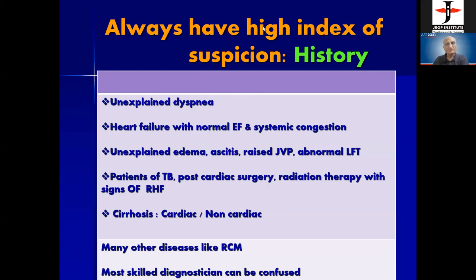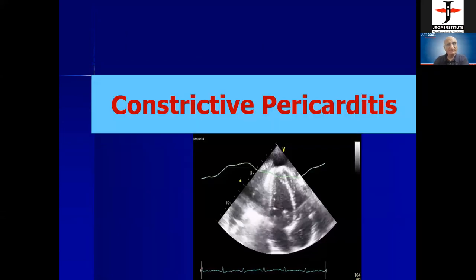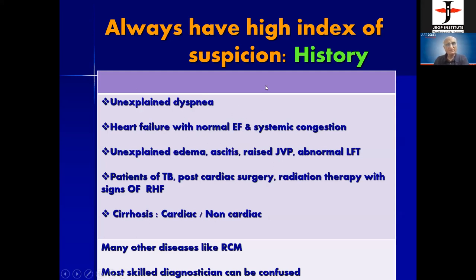Always have a high index of suspicion when there is unexplained dyspnea with raised JVP. Try to exclude heart failure with normal ejection fraction, as this is associated with diastolic heart failure. Unexplained edema, ascites, and raised JVP reflect increased right-sided pressure. Common causes of constrictive pericarditis include tuberculosis, post-cardiac surgery (most common in Western countries), and radiation therapy. If right heart failure signs appear in these settings, think of constrictive pericarditis.